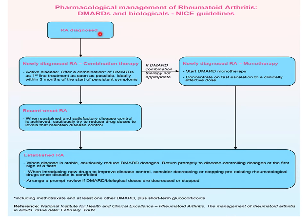In summary, once RA is diagnosed, we either go for monotherapy with fast escalation to maximum dose, or directly use combination therapy. We can also shift from monotherapy to combination therapy. For established RA that is stable, we reduce DMARD doses and return promptly to disease-controlling levels at the first sign of a flare; otherwise we maintain the patient on a maintenance dose.